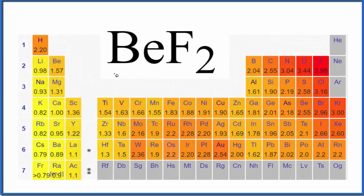In this video, we'll look at whether BeF2 is an ionic or covalent compound. This is beryllium fluoride. If we look at beryllium on the periodic table, that's right here, and then fluorine. We have a metal and a nonmetal, so we would expect this to be an ionic compound.